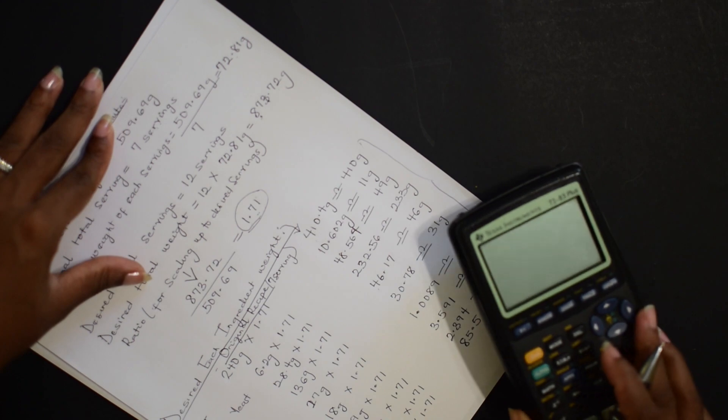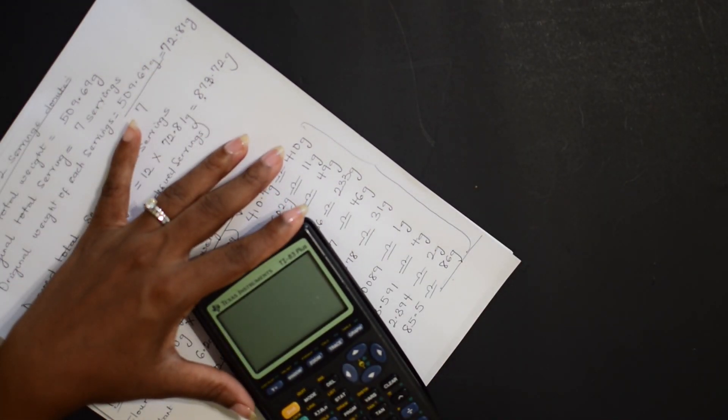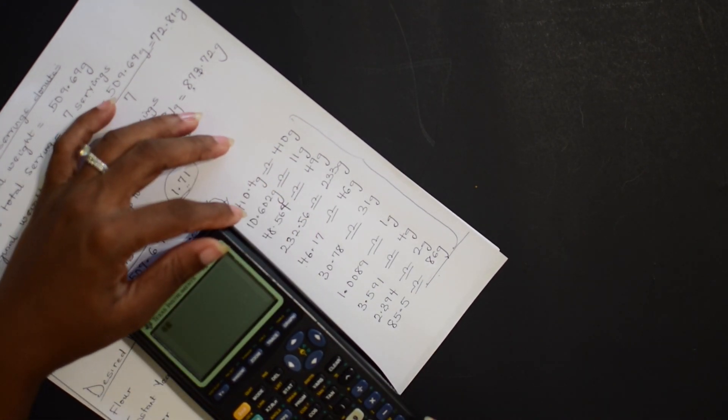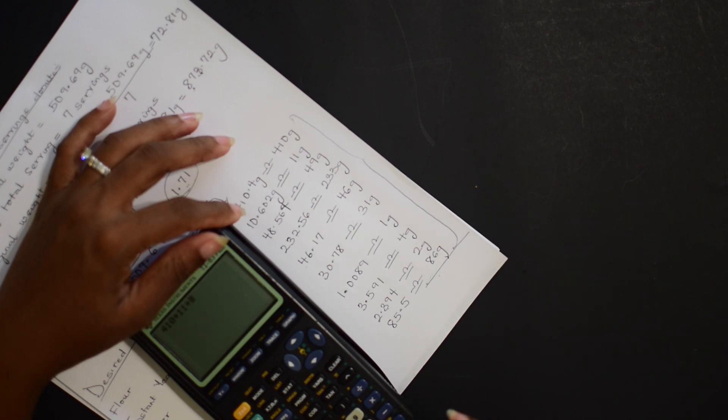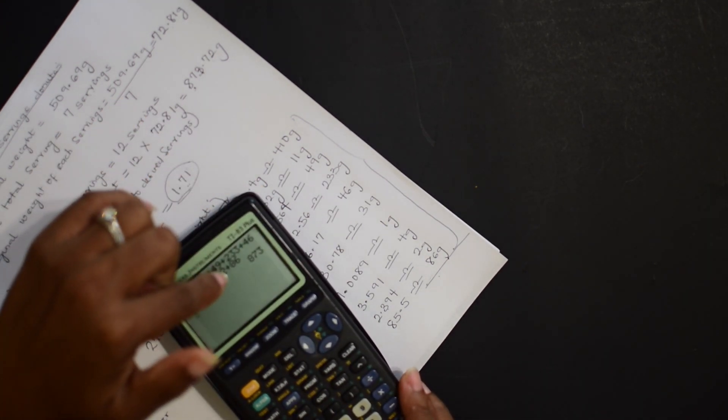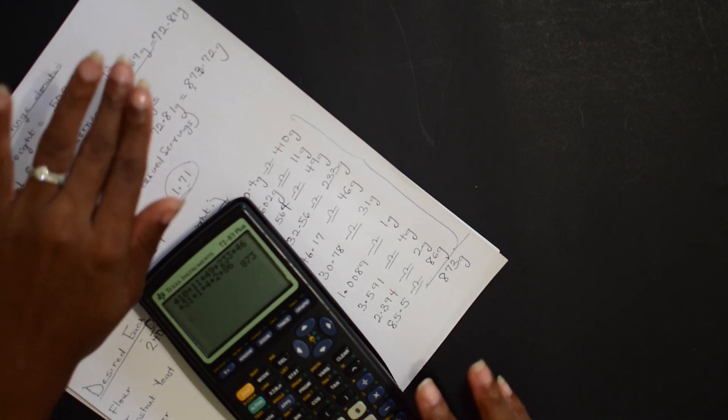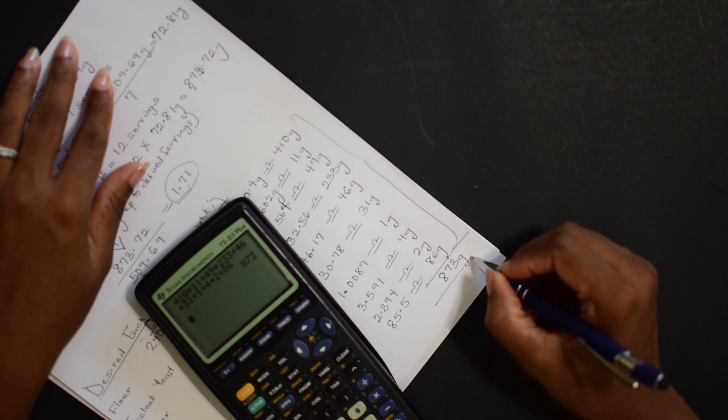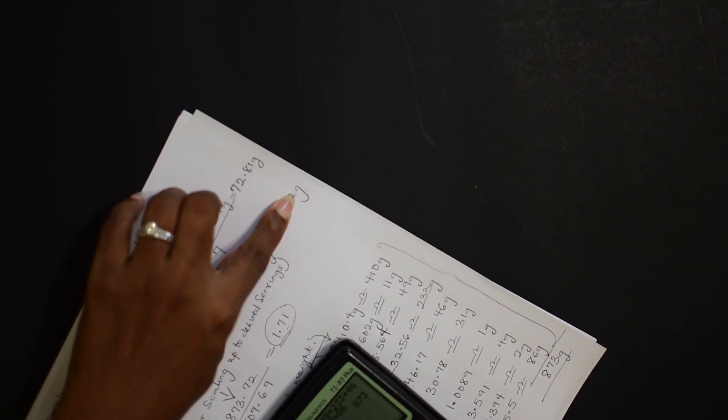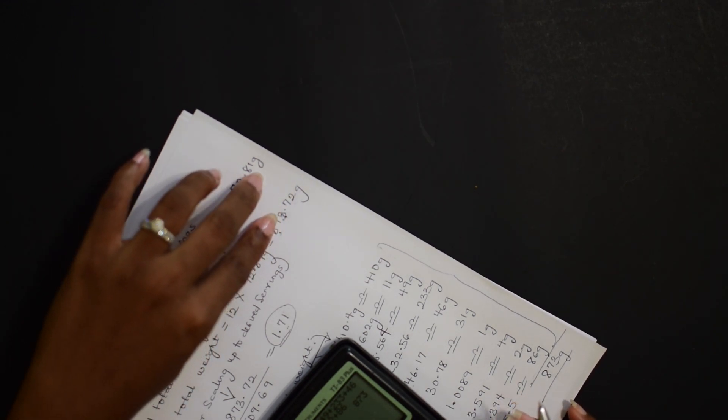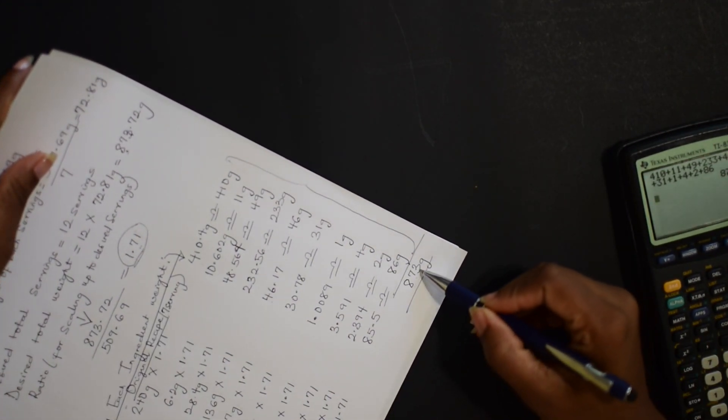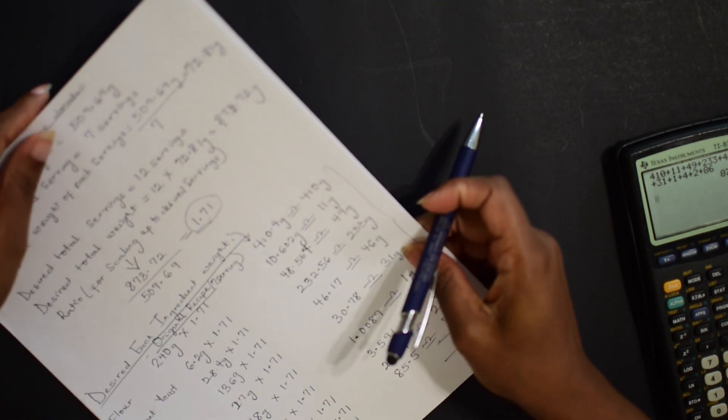Now for our new conversion or adjustment, if you go ahead and sum up all of them, 410 plus 11 plus 49 plus 233 plus 46 plus 31 plus 1 plus 4 plus 2 plus 86, it will give you, it gave me 873. So you see, 873 grams. Now what we calculated, because of all those decimal points and all the stuff before, was 873.72. However now, if we had everything else, we got 873, which is very close to 873.72 grams. So this is the total of what you'll be needing to make 12 servings.